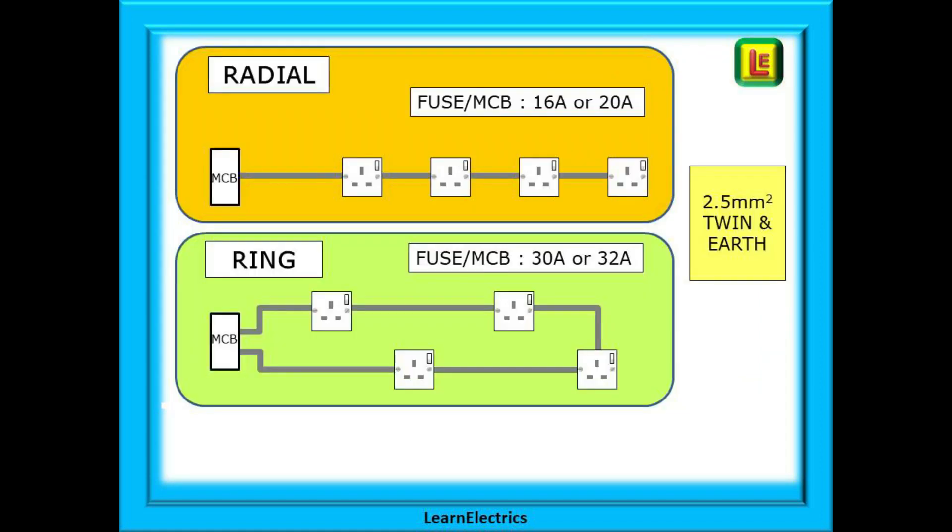Let's look at a very basic drawing. At the top is a radial circuit. The cables simply go from the circuit breaker or MCB and visit each socket in turn. At the last socket the cable stops. One cable supplies current to the whole circuit. The cable for a ring circuit, shown below it, is arranged so that the cable returns to the MCB and therefore forms a ring. We say that there are two current paths in a ring circuit.